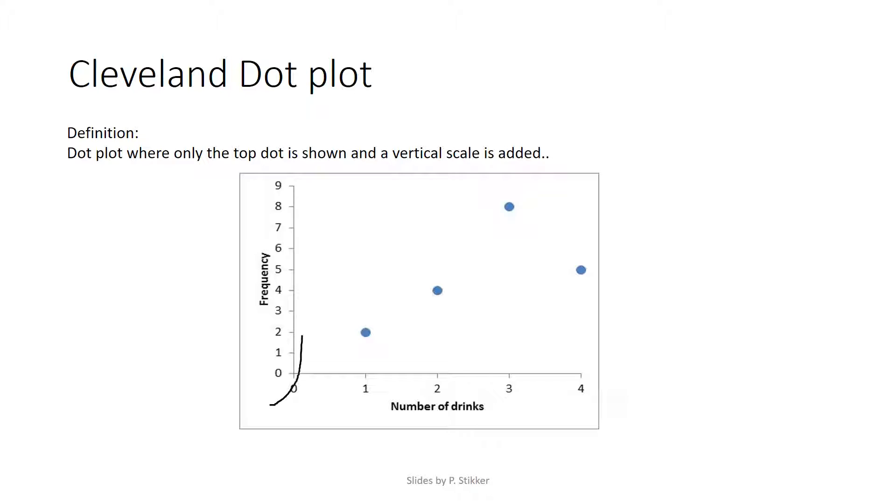But if you have more cases, it actually can still be used, and you won't need to draw so many dots. So in this case, we can still see that this dot represents that there were two people who drank one number of drinks.